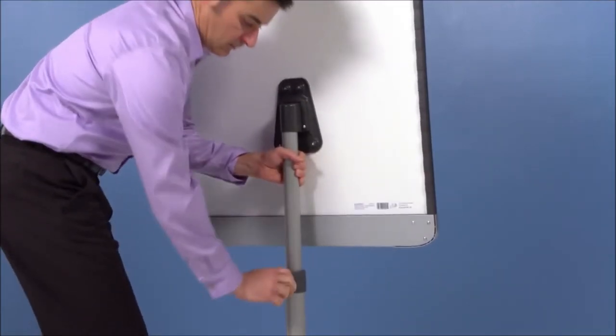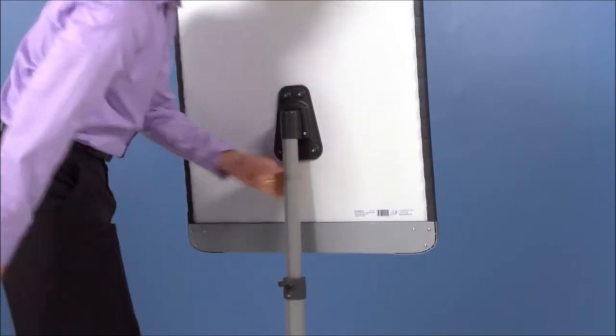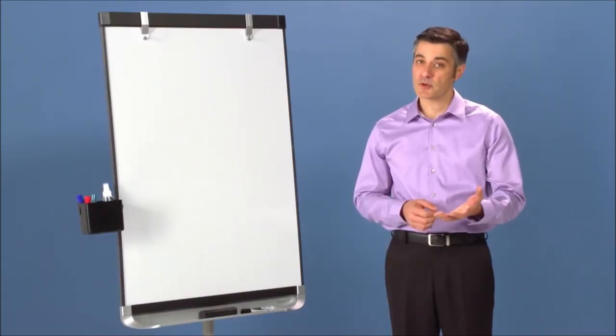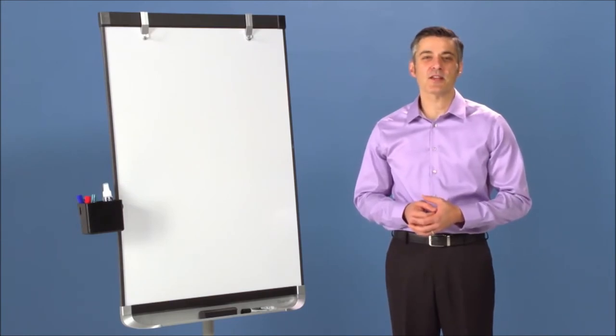The height adjusts from 67 inches to 77 inches, and it comes with a 15 year warranty, making everyone more comfortable with your purchase. Buy your Quartet Prestige II mobile presentation easel today.